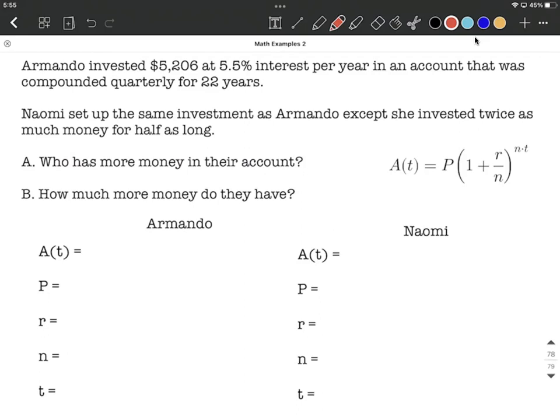I've got Armando listed on the left side, Naomi on the right side. Both of these are going to be utilizing the compound interest formula that's listed on the right hand side as well.